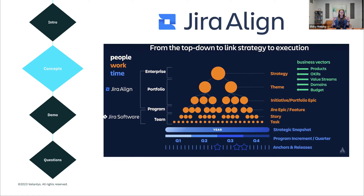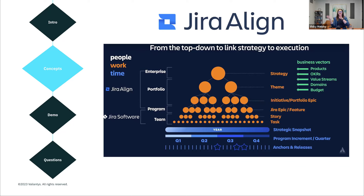What Jira Align was really designed for technically is to sync three different hierarchies across our enterprise. We like to group these into the idea of people, work, and time. If you think about work at a very high level, it all boils down to this: what work are we doing, who is doing that work, and in what time frame are they attempting to accomplish that work? I love showing this diagram before getting into the tool because it helps paint a mental image of what Jira Align is really doing.